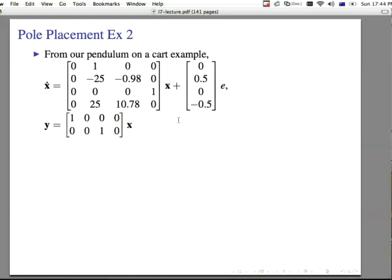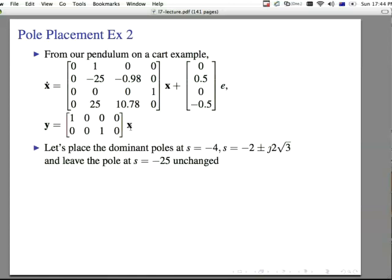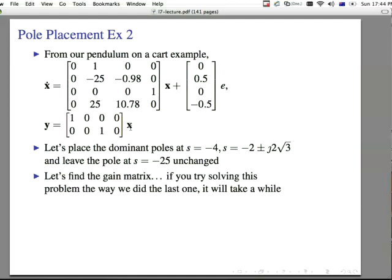For a pendulum on a cart example though, this is the 4 by 4. Notice that we have actually two outputs here, y1 and y2. If we want to place the dominant poles at s equals minus 4, s equals minus 2 plus minus j 2 square root of 3, and leave the pole at s equals minus 25 unchanged, then we can figure out what we have to do here. Let's look at finding the gain matrix to make this work. And if we worked the problem the way we did the last one, we'd end up with a quartic equation. And it would take a while to figure out what our values of g1, g2, g3, and g4 would have to be to make it all work out.